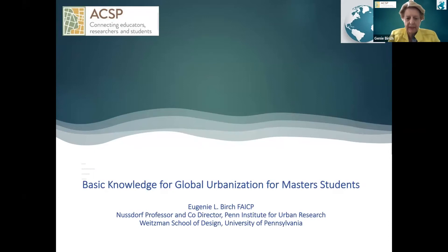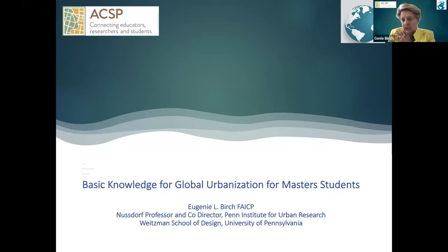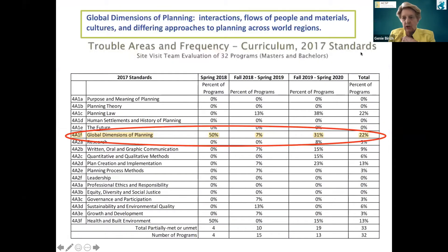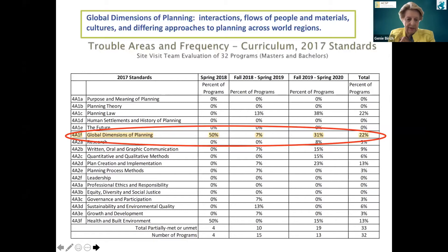I'm charged with thinking about what the basic knowledge for global urbanization should be for master's students and to look at the PAB requirement, just as Ed was talking about it. I thought I'd give a little slide presentation to show you where things are with this particular criterion. It is one of the most misunderstood and abused of the criteria that we have — along with law, nobody seems to know what it means, and I think that's really a problem.